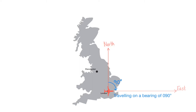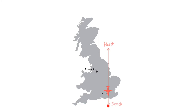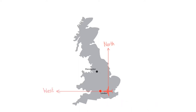If we travel south from our starting point we would call that travelling on a bearing of 180 degrees, because you would need to turn 180 degrees clockwise from north to end up facing south. We would call travelling west a bearing of 270 degrees, because you would need to turn 270 degrees clockwise from north in order to face west.